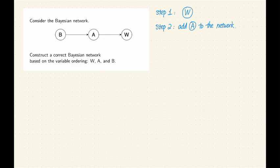Okay, so we have two possibilities here. If A is already independent from W given nothing, basically given no parents, that means we can directly add A to the network with no parents. This is one possibility. If A is already independent from W, we don't need any parents to make A independent from the existing nodes.